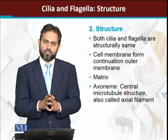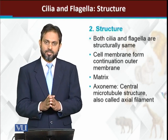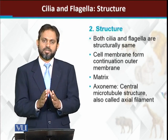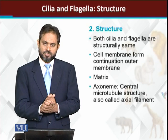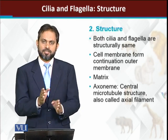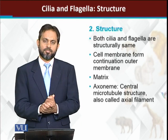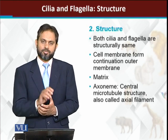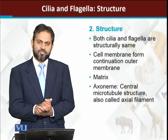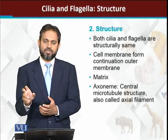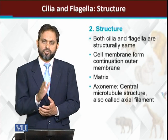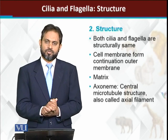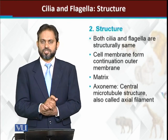Structurally, cilia and flagella are similar to each other and their chemical composition is also the same. In eukaryotes, both cilia and flagella are made up of tubulin protein, forming microtubules, so their internal structure is also identical. However, in prokaryotes, flagella are not made of tubulin protein - there it is flagellin protein. So prokaryotic flagella are made of flagellin protein while eukaryotic cilia and flagella are made of tubulin protein.